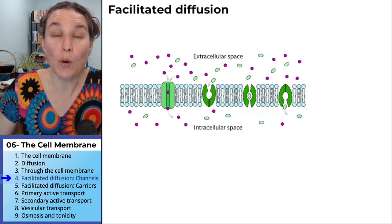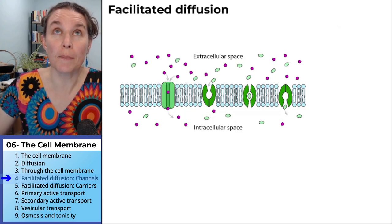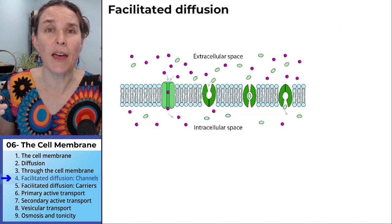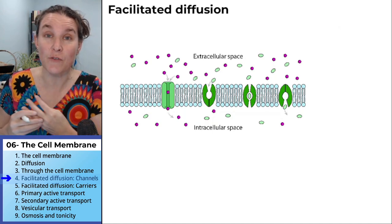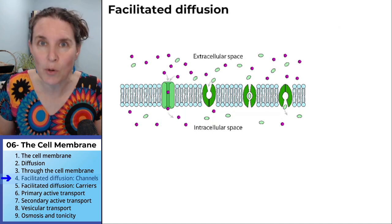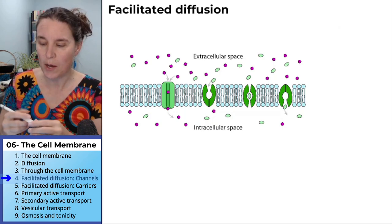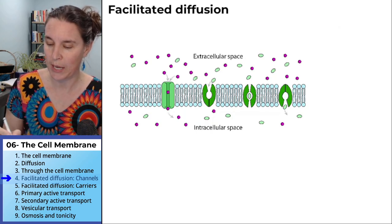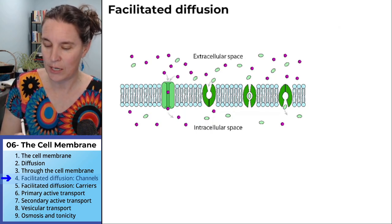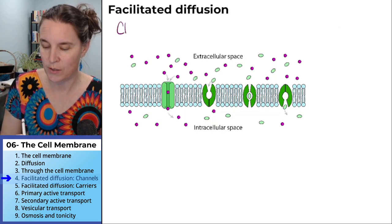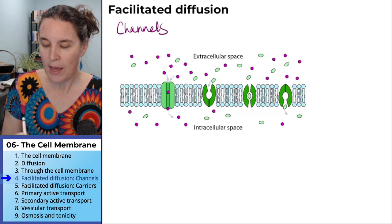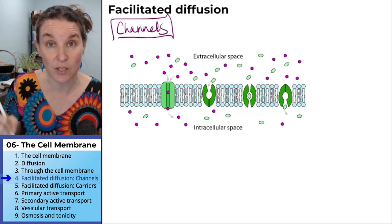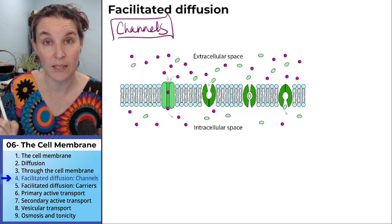We're going to talk about proteins that carry out facilitated diffusion. We're going to talk about them with this same picture, so all the notes are going on this one page. We're going to start out talking about channels. There are channels and carriers illustrated in this diagram.